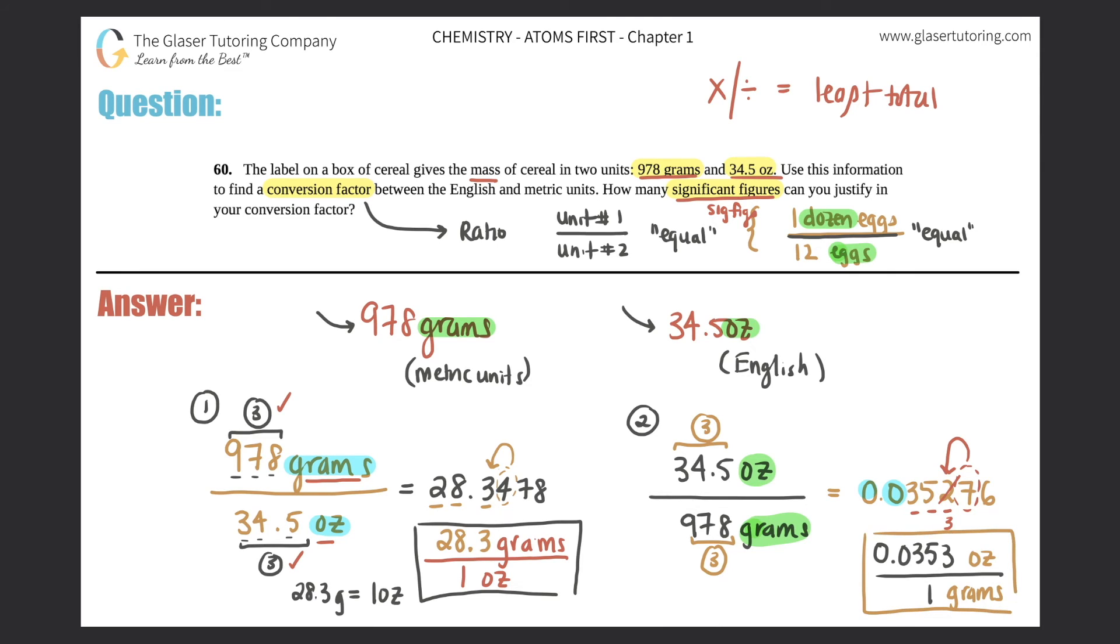Just know that these two conversions are equivalent to each other - they're just flip-flopped. In one of them it's grams on the top and ounces on the bottom, and the other one it's ounces on the top and grams on the bottom. So when you start to do your conversion math, which will come a little bit later, you will use either one of them - it does not matter which one you use, you'll still get the same answer at the end.